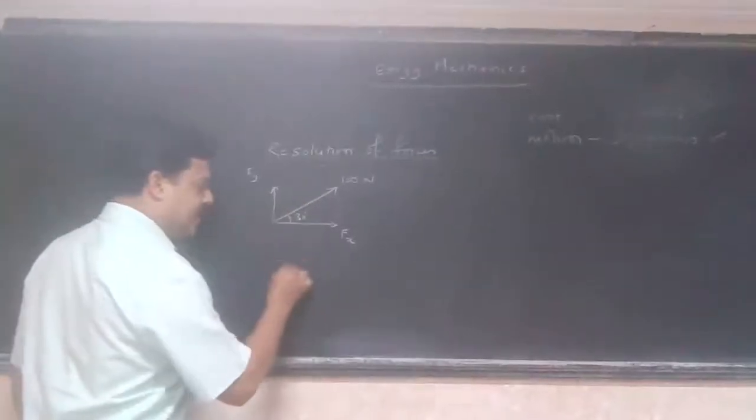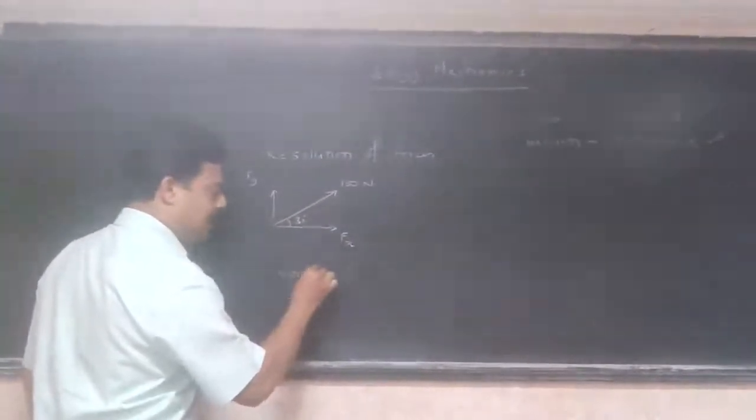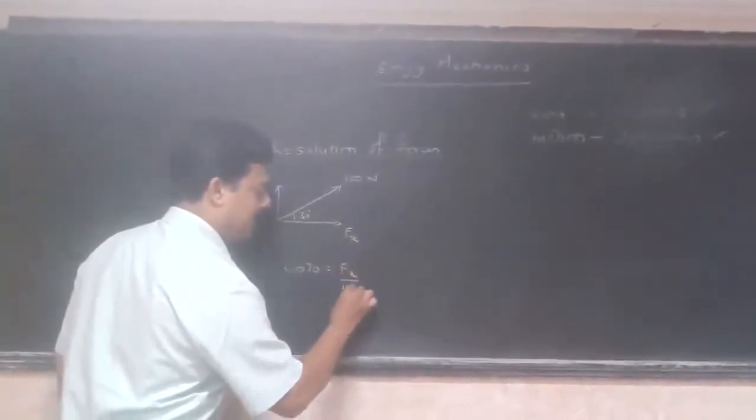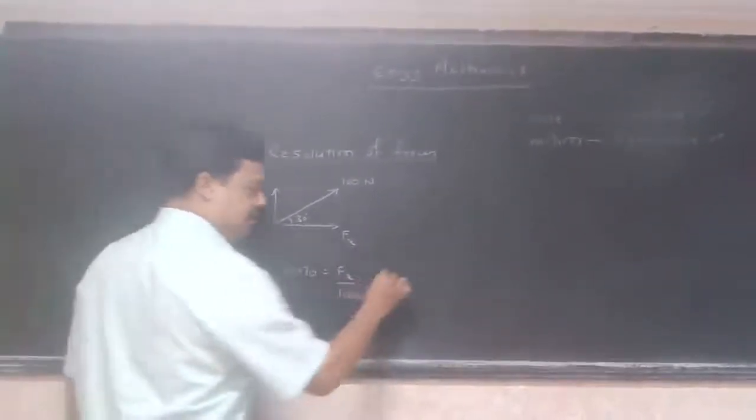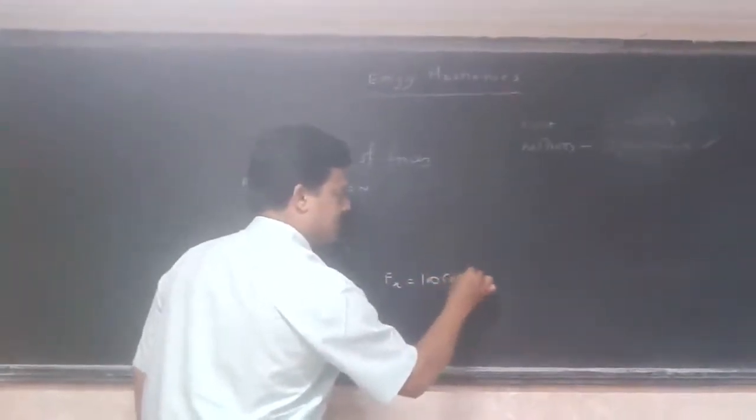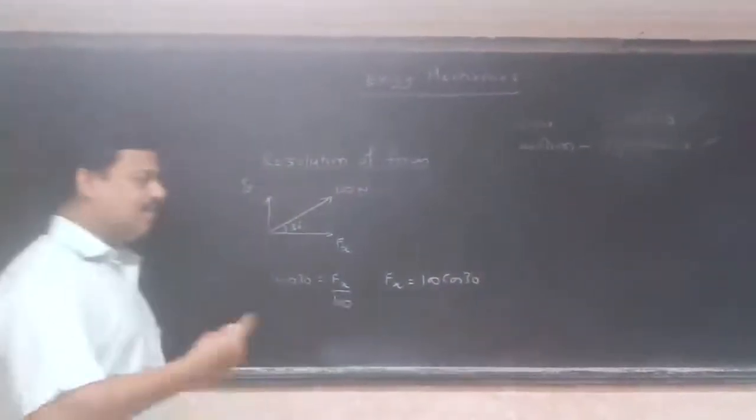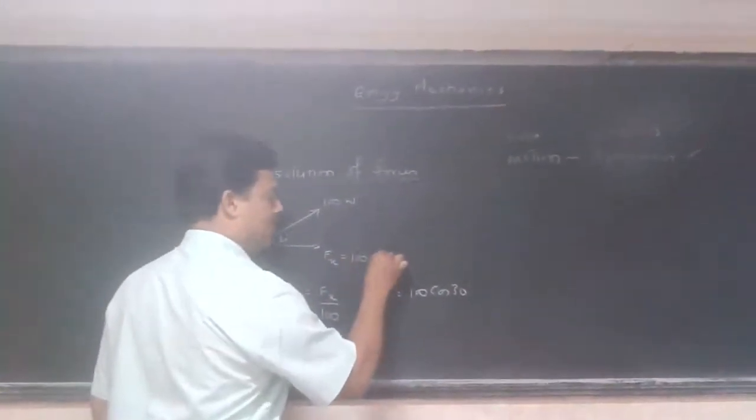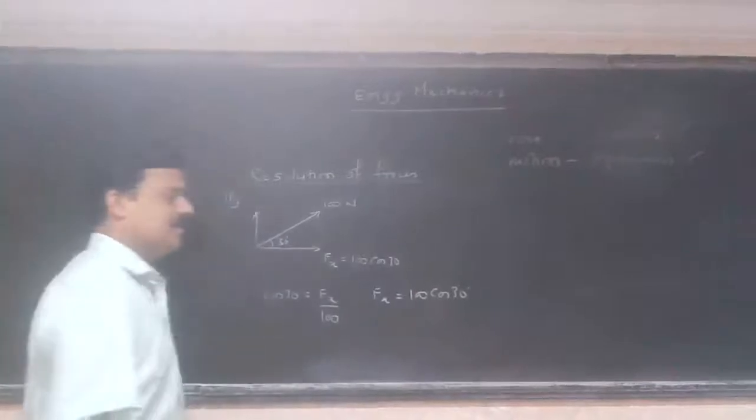Hence, can we say cos 30 is equal to fx upon 100. In other words, fx is 100 cos 30. That gives us the magnitude of fx as 100 cos 30. Is that clear?